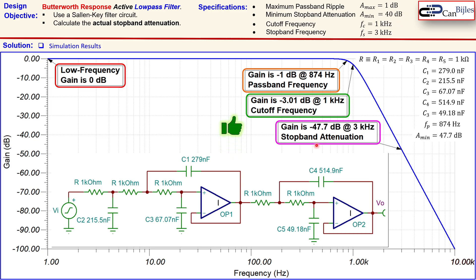That concludes our example of the Butterworth response active low-pass filter using the Sallen-Key configuration. We calculated the required filter order, selected component values, and verified the design meets all specifications. If you have any questions please let me know in the comments. Don't forget to like and share these videos so we can reach more people. Thanks for your cooperation and see you next time.